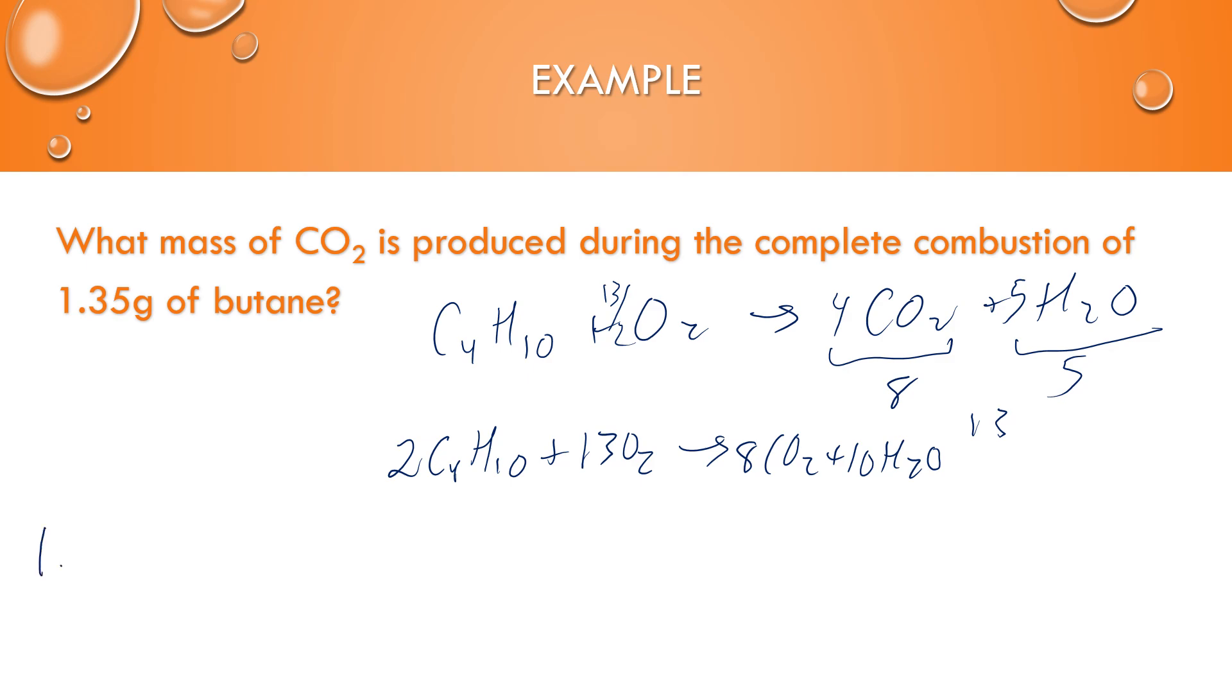So I'm going to start with my 1.35 grams of butane. The molar mass of butane is just about 58. I'm going to round a little bit here. There is one butane for every four CO2 molecules being formed. And then we're looking for the mass of CO2, and the molar mass of CO2 is 44 grams per mole. And so when you solve that out, you get 4.10, rounding to three sig figs, grams of CO2.